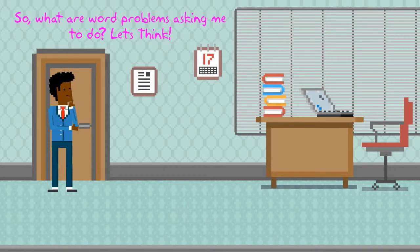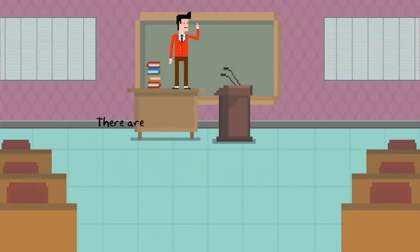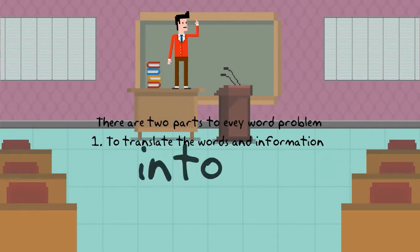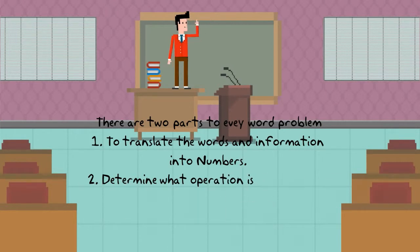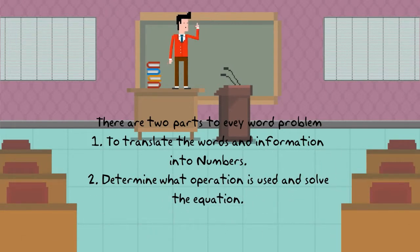Well, let's think. In doing this, we need to look at the two parts of every word problem. We first need to translate the words and the information into numbers. And then we determine what operation is used and solve the equation.